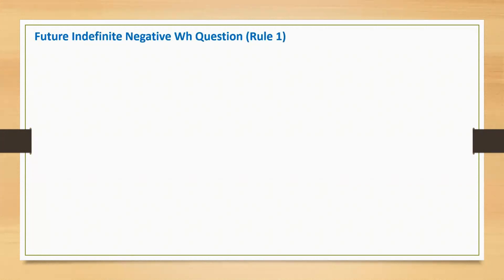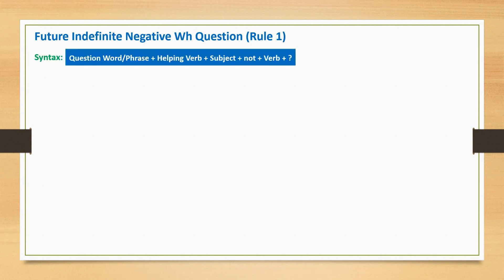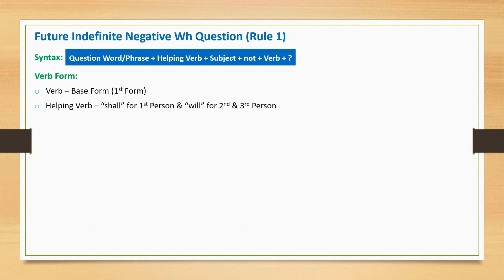Future indefinite negative WH question. It is a negative interrogative statement and it starts with an interrogative pronoun. As per the rule, the sentence begins with a question word or phrase, followed by helping verb, subject, the word 'not', main verb (base form), and a question mark. 'Shall' is applicable for first person and 'will' for second and third person.